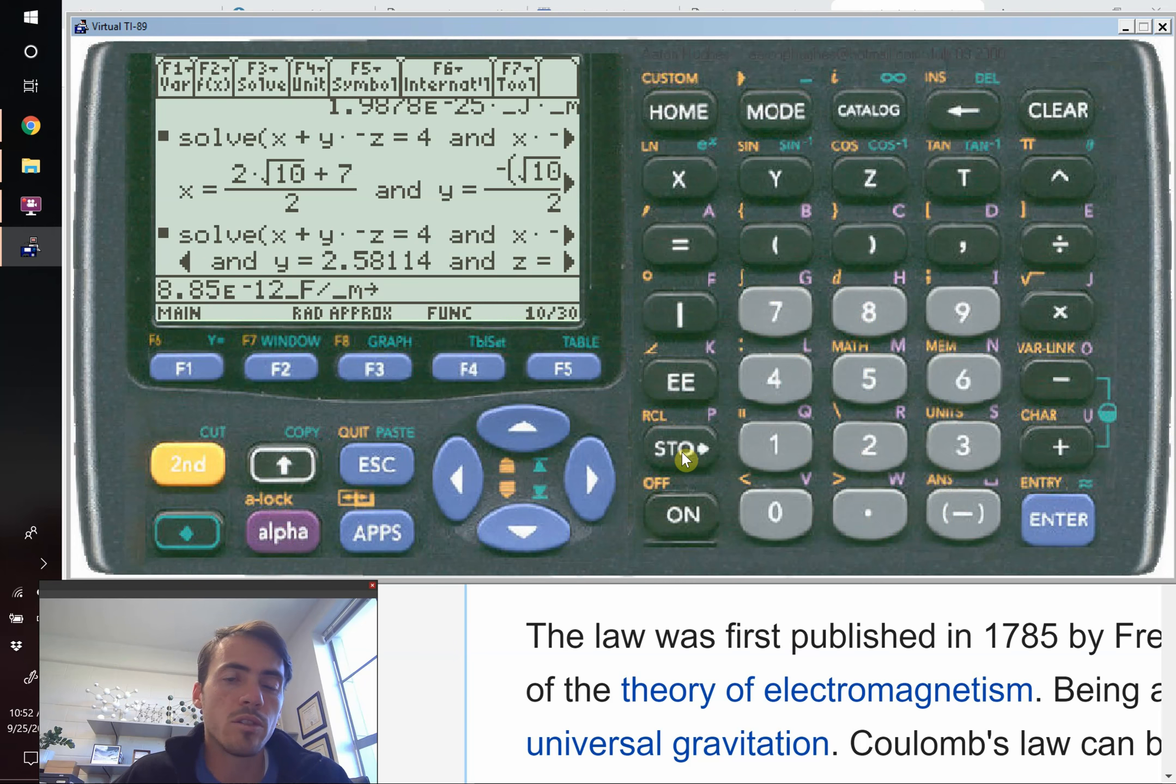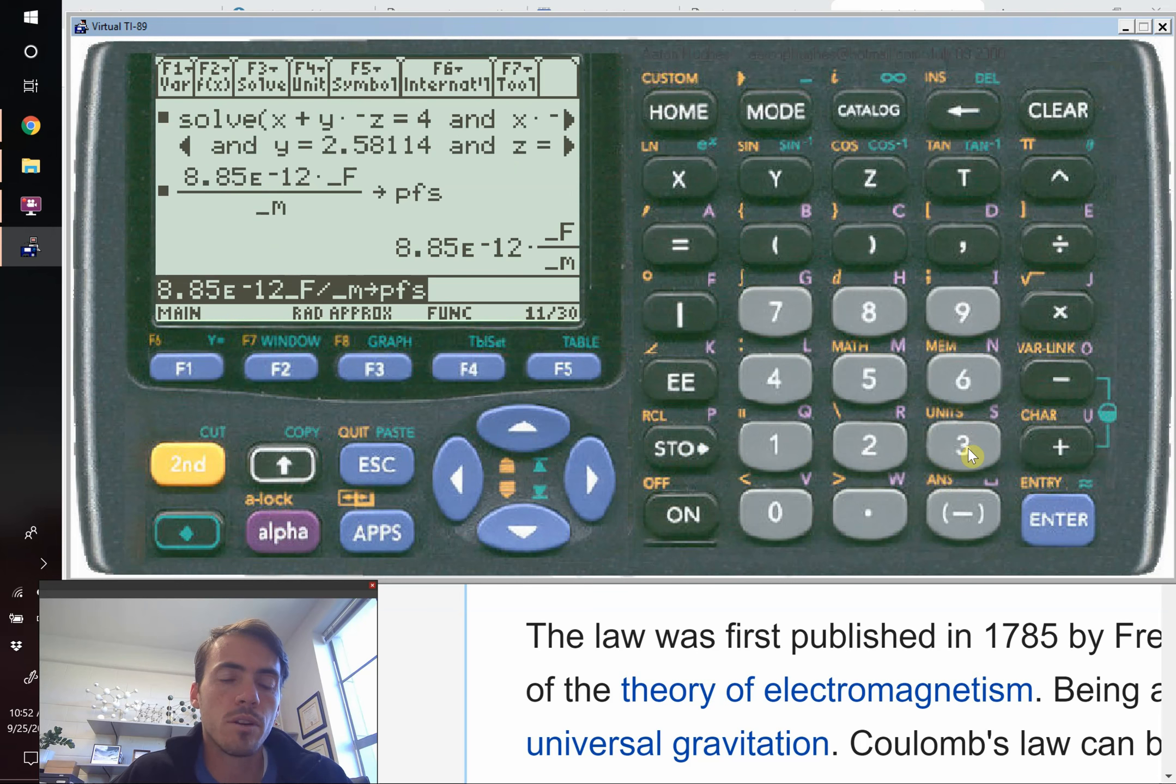We're going to store that into a new variable that we're going to name permittivity of free space, PFS. So we're going to do P, F, S. This will be a new variable for us. There it is.